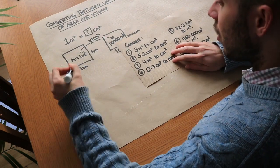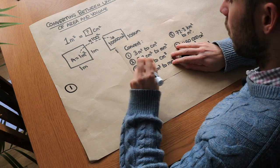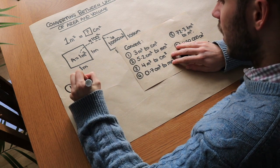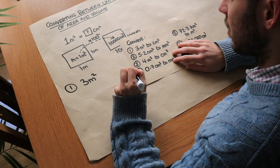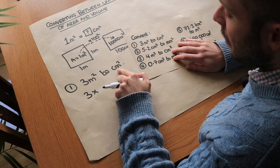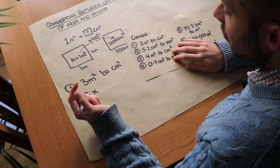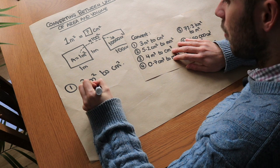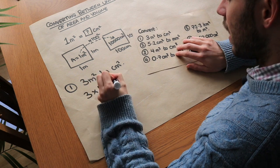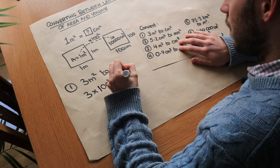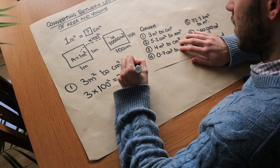Let's use that to answer these questions. We want to convert three metres squared to centimetres squared. To get from metres to centimetres we multiply by a hundred, so therefore we're going to multiply three by a hundred squared, and that gives thirty thousand centimetres squared.